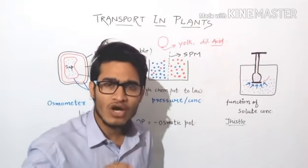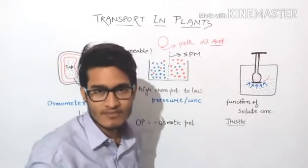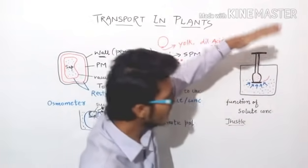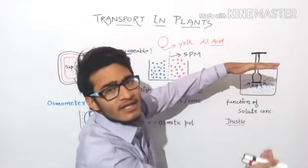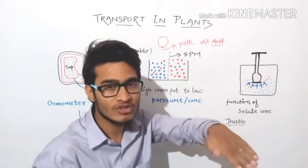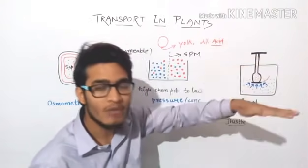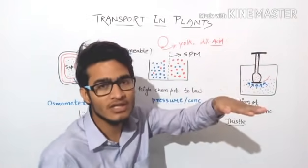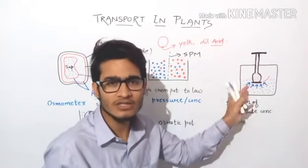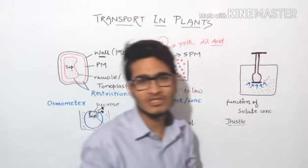If we want to stop the movement of water, we can apply external mechanical pressure downward. This pressure will stop water from entering the sucrose solution and raising the level — we are stopping osmosis. The pressure applied to stop the movement of water molecules from high water potential to low water potential is known as osmotic pressure. So the osmotic pressure is the quantity of pressure we apply to prevent osmosis from occurring.